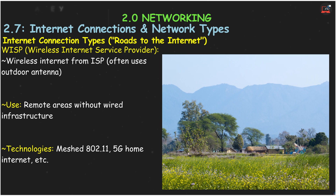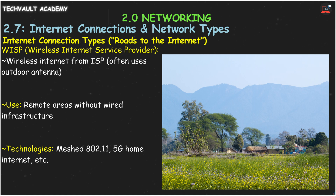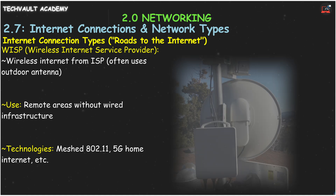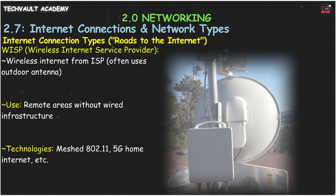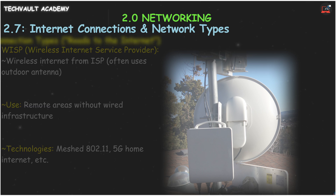For remote areas without easy cable or phone lines, there's WISP — Wireless Internet Service Provider. This provides internet wirelessly from a provider, often using an outdoor antenna to connect to their network. Speeds can vary widely.